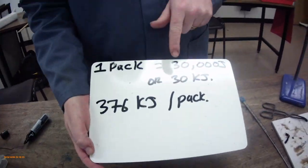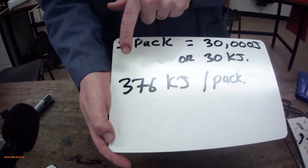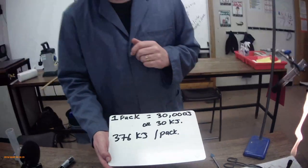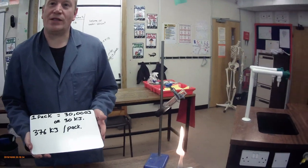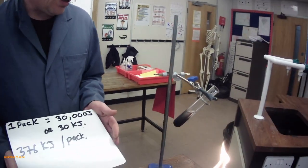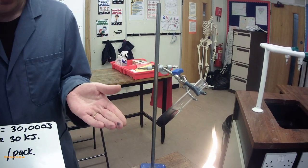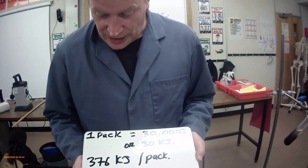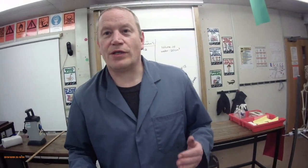There is an enormous difference between the data. We got 30 kilojoules per packet and the actual answer is 376, quite a massive factor output. That's not a great surprise because of the equipment we've used. There's an awful lot of wasted heat here, a lot of blackness under here which would reduce our efficiency.